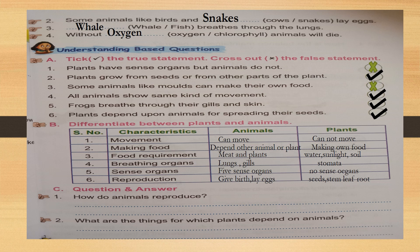Fifth one: frogs breathe through the gills and skin. Yes — tadpoles use gills, and after they grow into frogs they breathe through gills and skin. Give tick. Sixth: plants depend upon animals for spreading their seeds. Yes — give tick. That is true. I have given the answer on the screen — you can check.